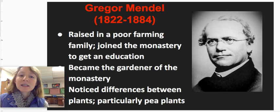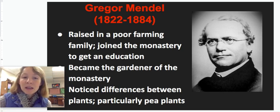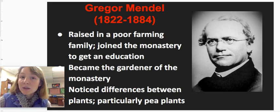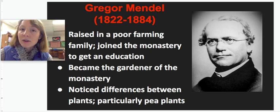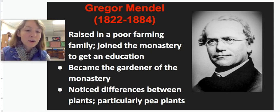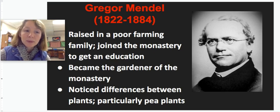In the 1800s there was a guy called Gregor Mendel. He was raised in a poor family, and back then one of the easiest ways to get an education was to join the monastery. So he joined the monastery, became a monk, and became the gardener there. As he read different articles, learned things, and did the gardening, he noticed differences between plants — particularly in the pea plants.